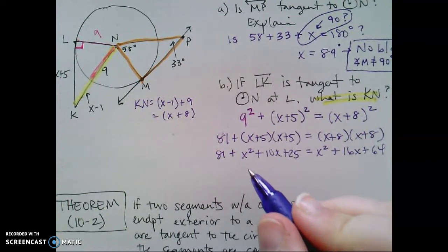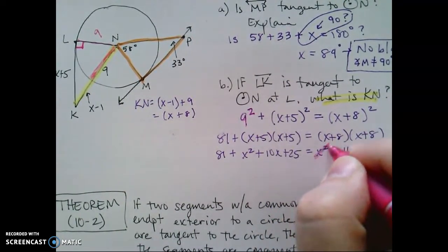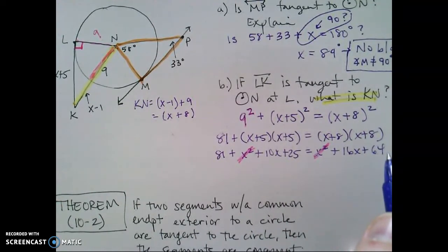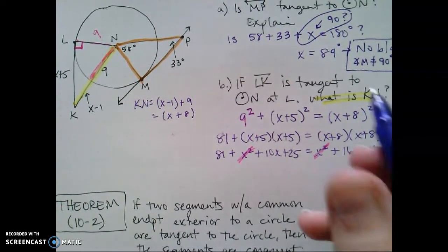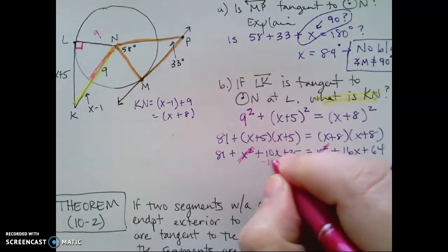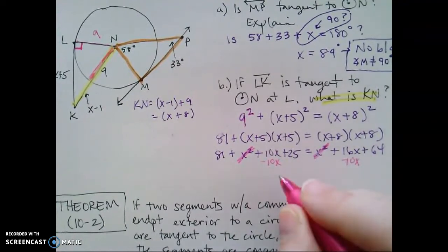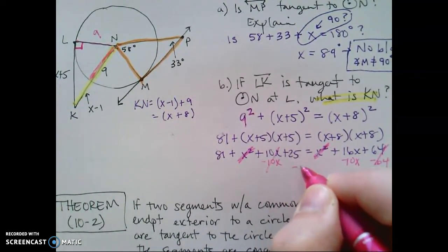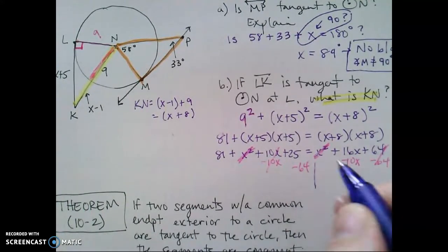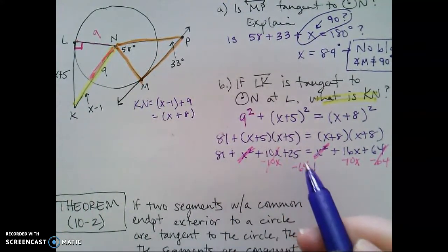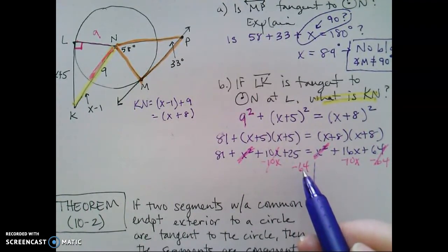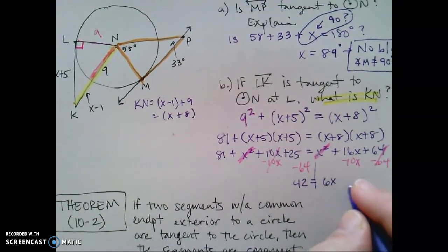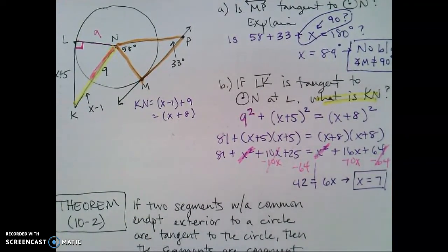So when I start to combine like terms, I notice my x squares are going to cancel each other out because they're going to add to zero. I'm going to set my x's to one side, my constants to the other side. So I want a positive leading coefficient. So what I'm going to do is I'm going to subtract 10x here. And because I'm running out of space, I'm going to also subtract 64 here. And what we end up with on the left is 81 plus 25 minus 64. That is equal to 42. 16 minus 10 is 6x. That makes x equal to 7.